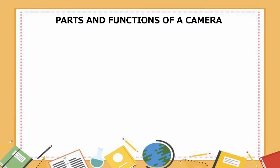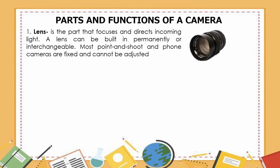Whether you are using the latest DSLR, a simple point and shoot, or the built-in camera in your cellular phone, there are common parts that you should know about. The first part is the lens — it is the part that focuses and directs incoming light. A lens can be built in permanently or interchangeable. Most point and shoot and phone cameras have fixed lenses that cannot be adjusted.